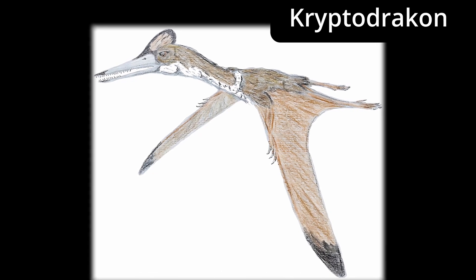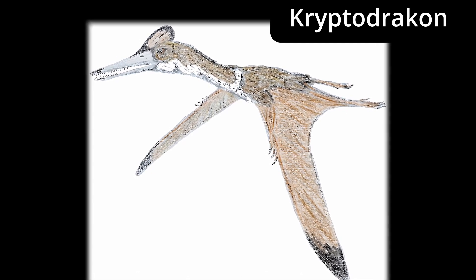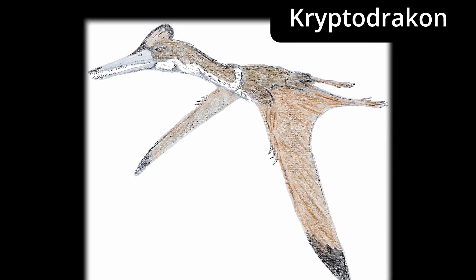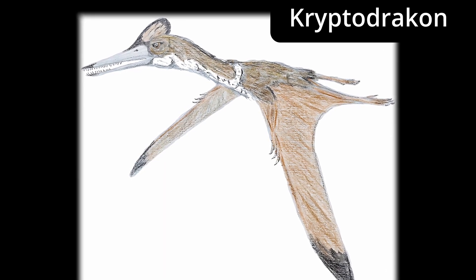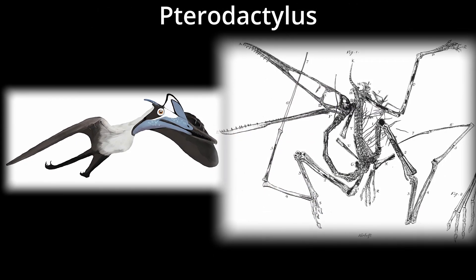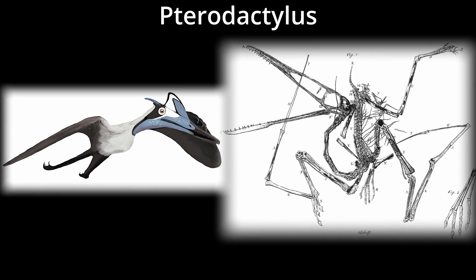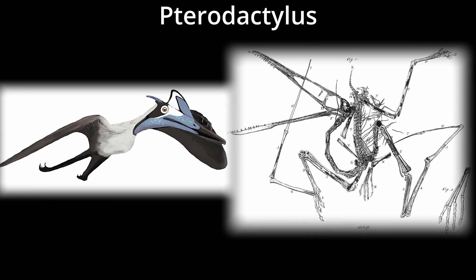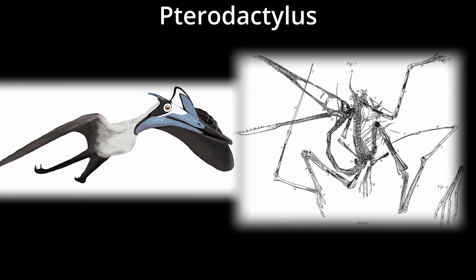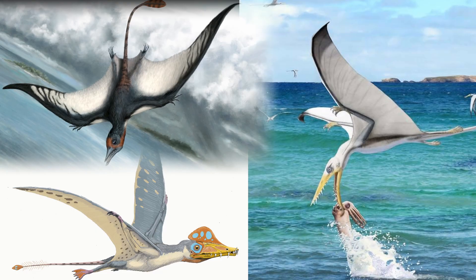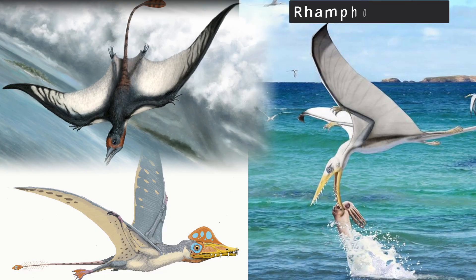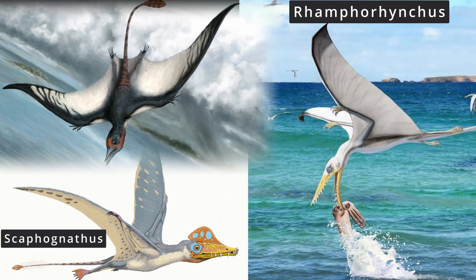Pterodactyloids, in contrast to the Ramphorhynchoids, possess a shortened tail and elongated metacarpals. Other late Jurassic pterodactyloids include Pterodactylus and Nathosaurus. Ramphorhynchoids continued as well, with some late Jurassic examples being Ramphorhynchus, Scaphonathus, and Belabrunus.